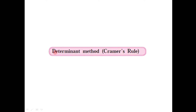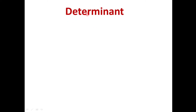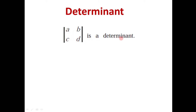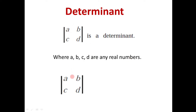First of all, to understand this method, we must understand what is the determinant. Suppose any four real numbers are given to us. If we write those numbers in the sequence a, b, c, d, it is called a determinant, where a, b, c, d are any real numbers. The value of this determinant is obtained by the product ad minus bc.